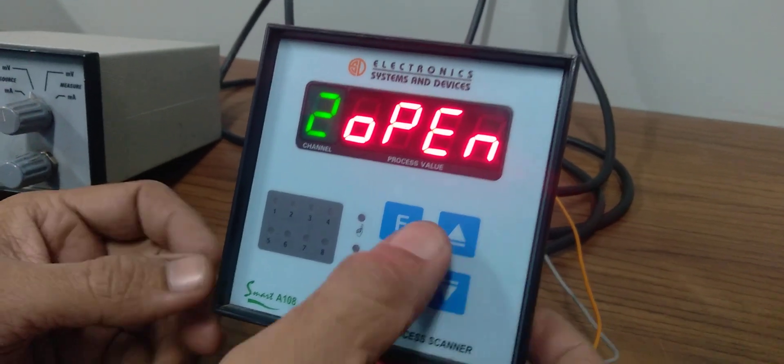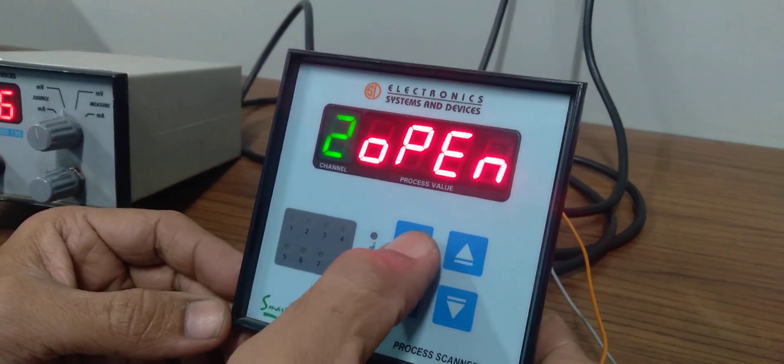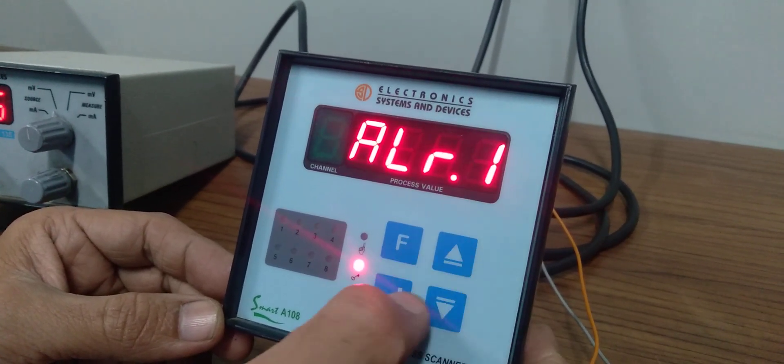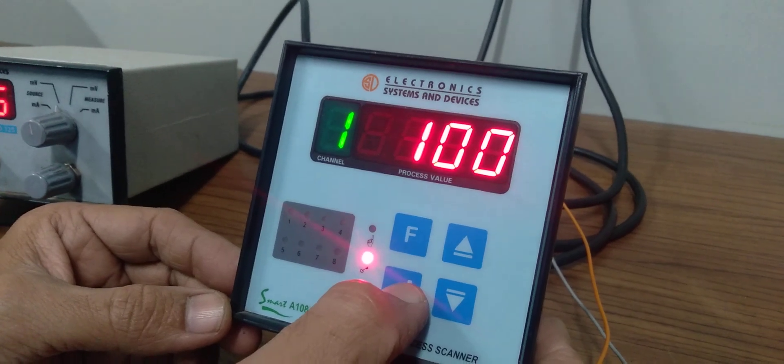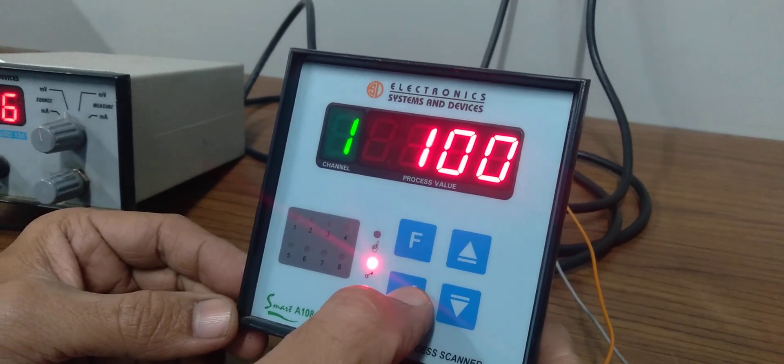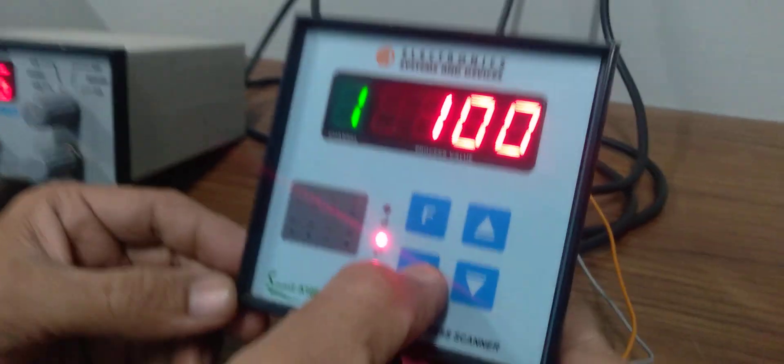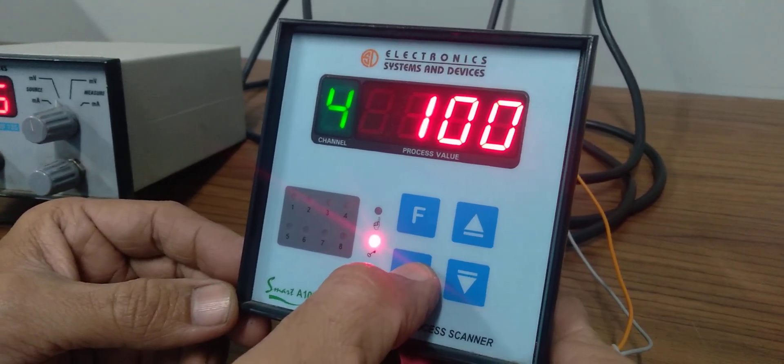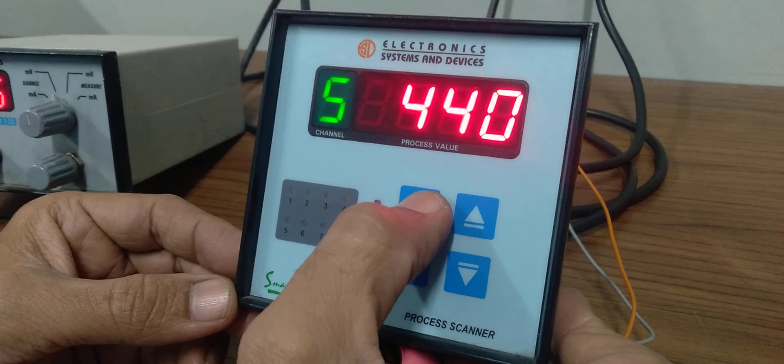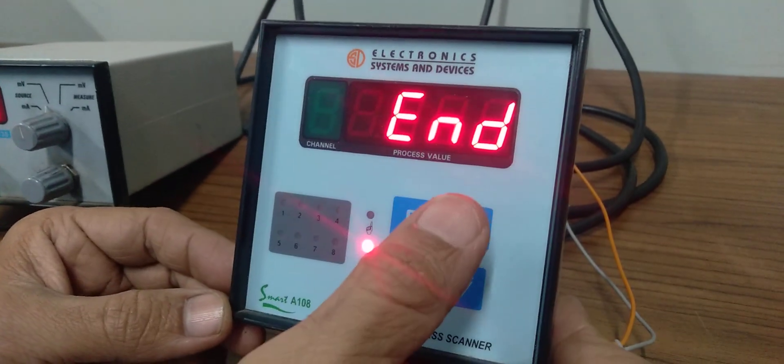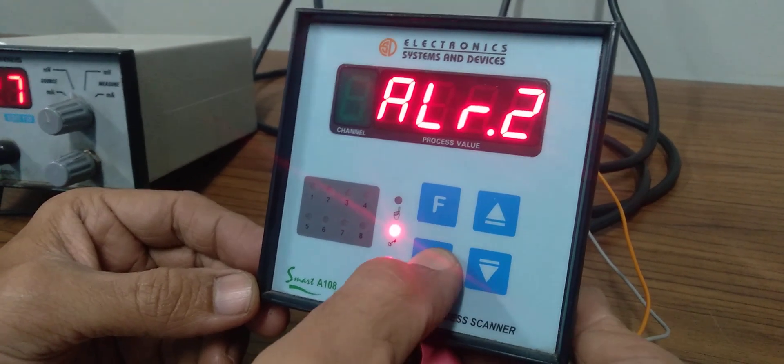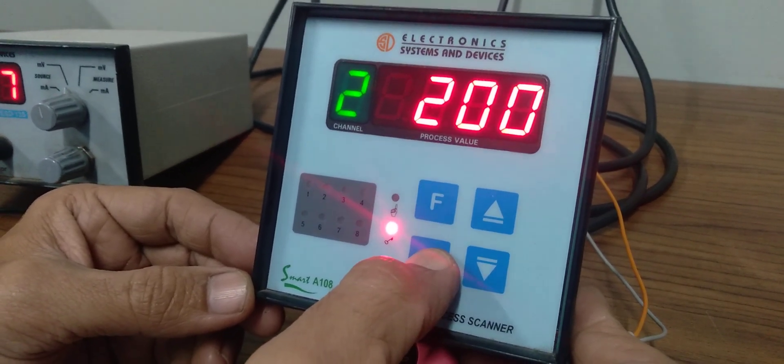Now we'll go to the alarm settings. Each channel has a setpoint. For alarm 1, we've kept it at 100 for channels one, two, three. All eight channels will have individual setpoints for alarm 1. Now we'll see alarm 2, which is for the trip setpoint. This one we've kept at 200. You can change any setpoint to whatever you want.